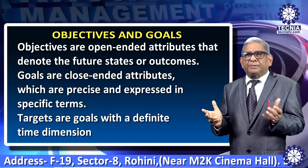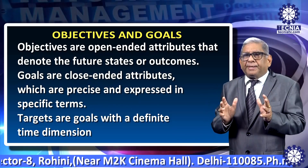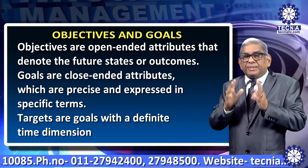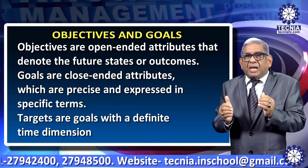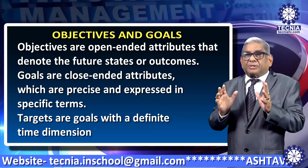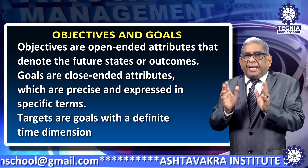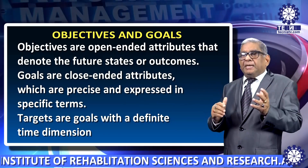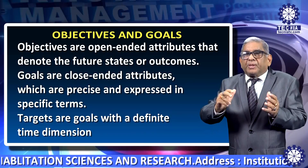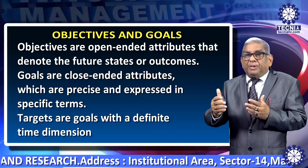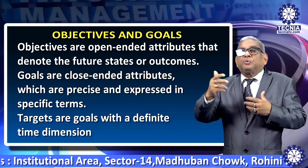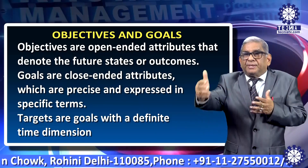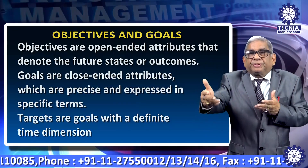What are objectives, goals, and targets? Objectives are open-ended attributes that denote future states or outcomes. Goals are close-ended attributes which are precise and expressed in specific terms. Targets are goals with a definite time dimension. For example, if a company's objective is to be a market leader, its goal will be to achieve 60% market share, and the target will be to achieve 60% market share within the next two years. So, objective is a direction, goal is a destination, and target tells you when you will reach the destination.